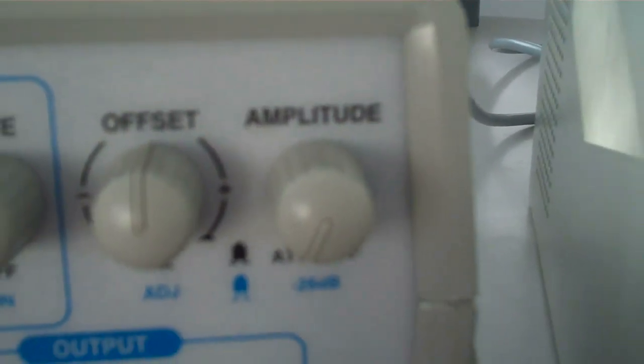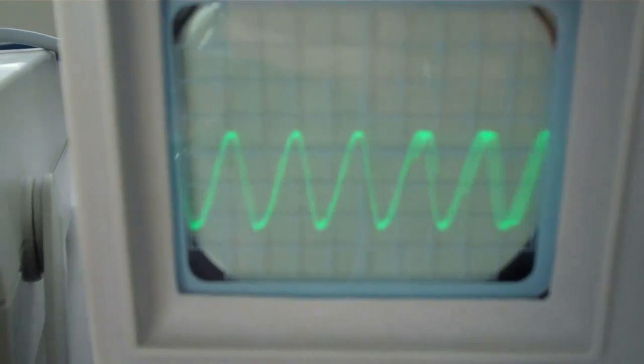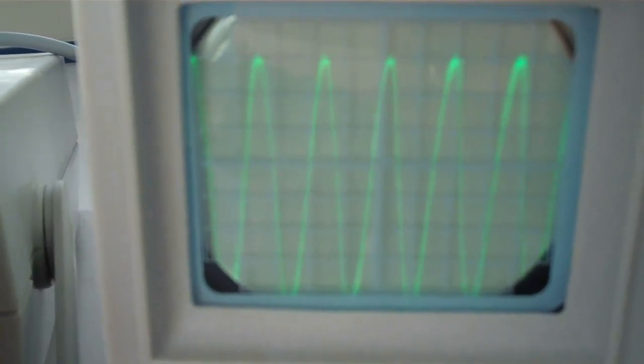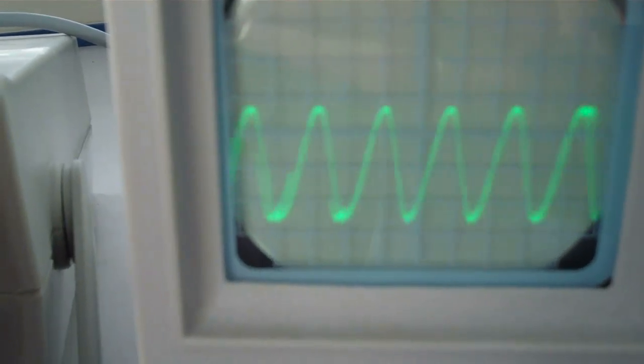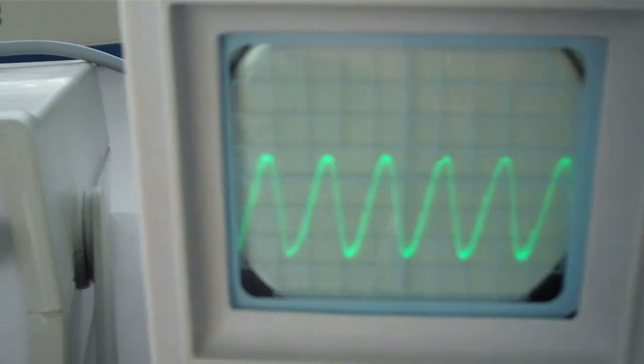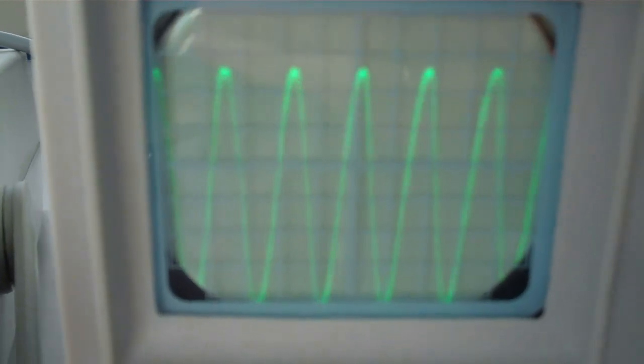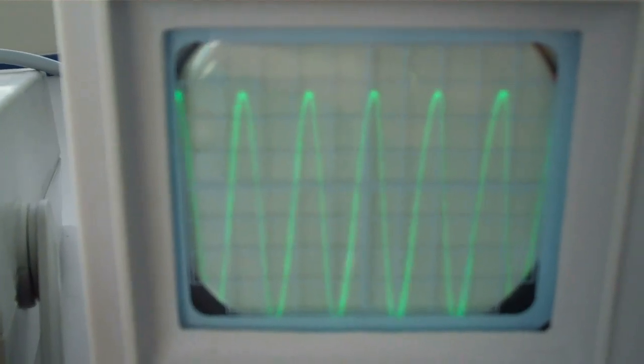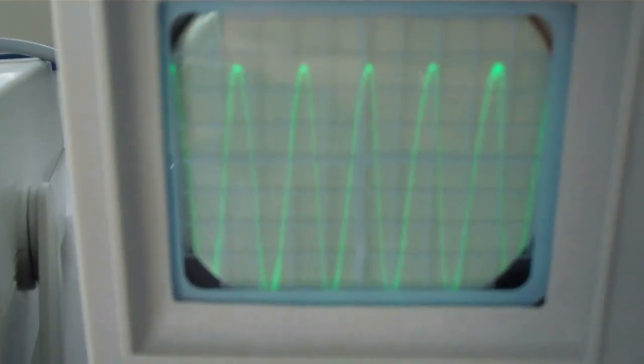What we're going to do now is we're going to change the amplitude of the wave and we're going to see what happens here, so listen carefully, and we'll reduce it again. So what's happening there is the frequency doesn't change, we still have the same number of waves per second, but the volume gets higher and the size of the wave gets higher, that's what amplitude is. If you have an electric guitar then you plug your electric guitar into an amplifier which increases the volume.